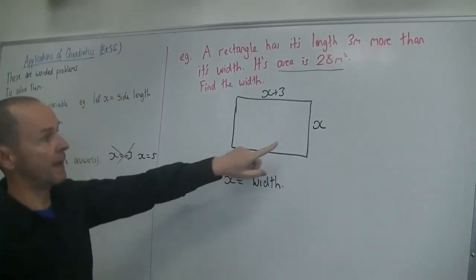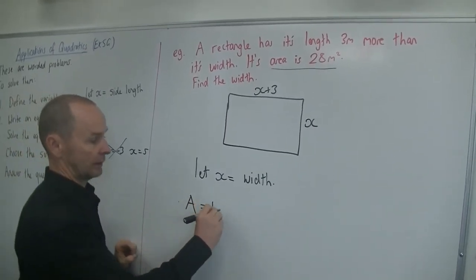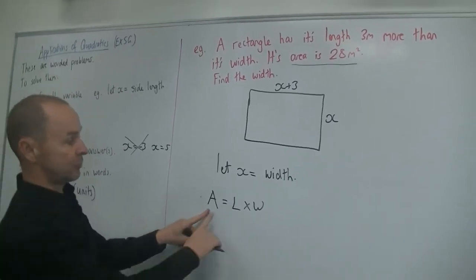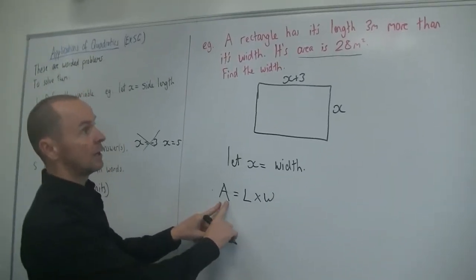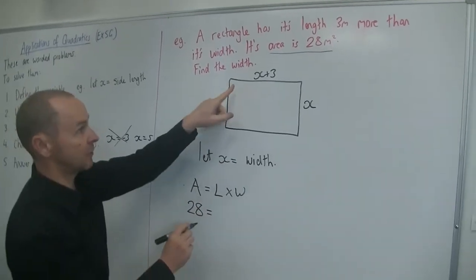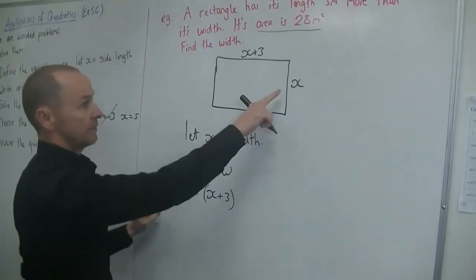So what do we know about the area of a rectangle? The formula, area equals length times width. So I'm going to use this formula and substitute whatever I know for these values. So the area is 28, the length is x plus three, and the width is x.